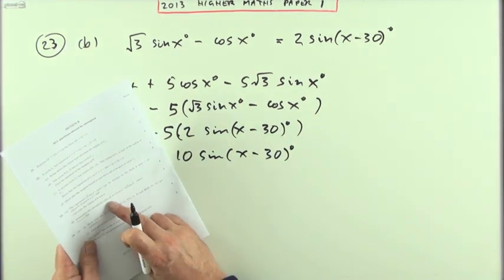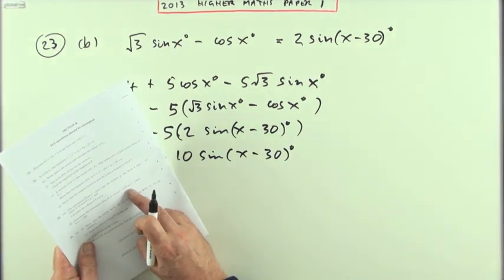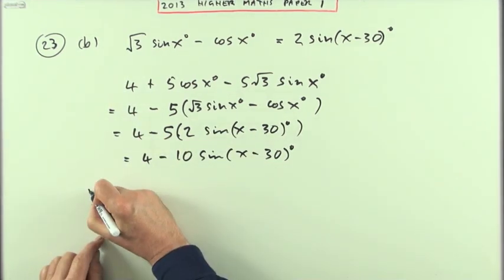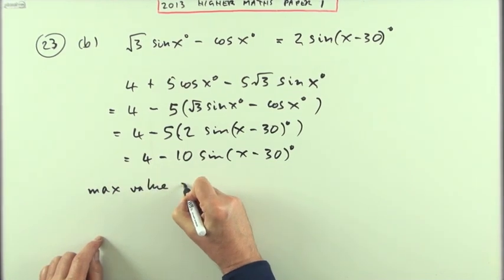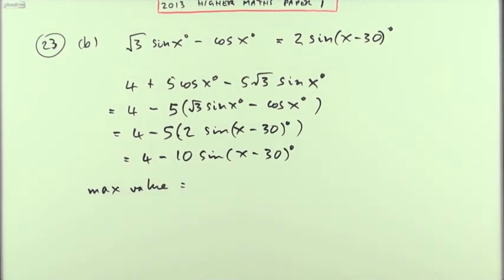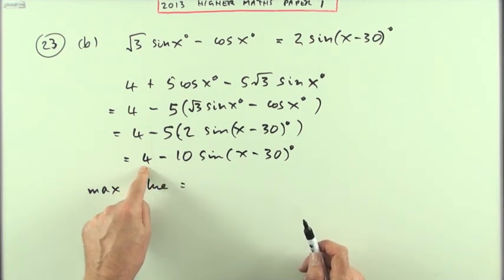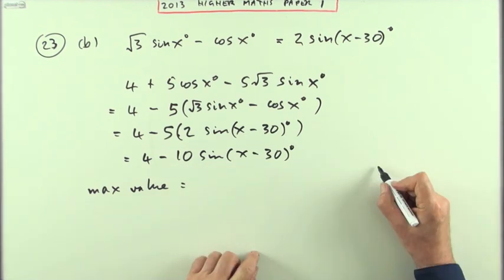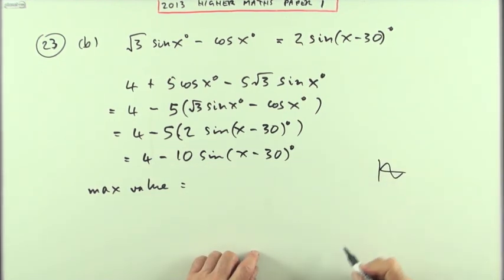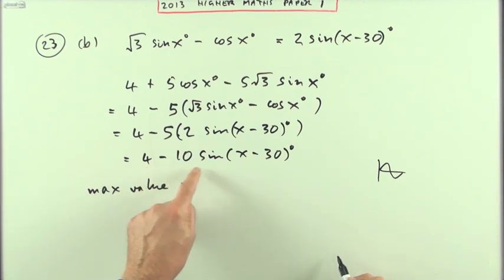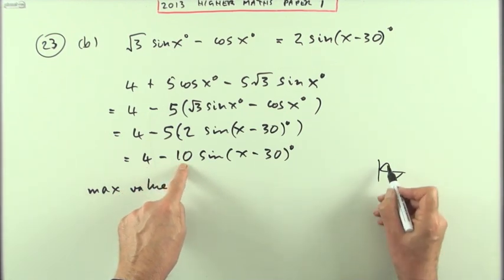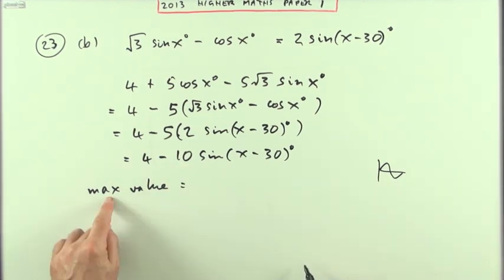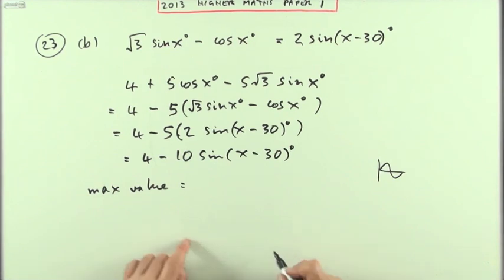Now this part just says determine the maximum value of this, not where it occurs, so I'm not going to be bothered too much about this part of it then. Quite simply, the maximum value will be, you can consider it either way, there's three parts to this: there's the 4 which is fixed, there's the 10 which is fixed, and there's the sine which is variable. But a sine can only go up and down 1, so the only limits you've got to this would be 4 minus 10 times the maximum 1, or 4 minus 10 times the minimum negative 1.